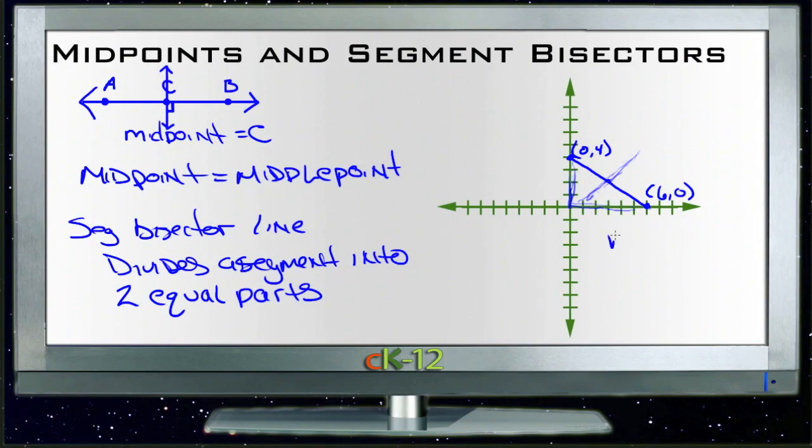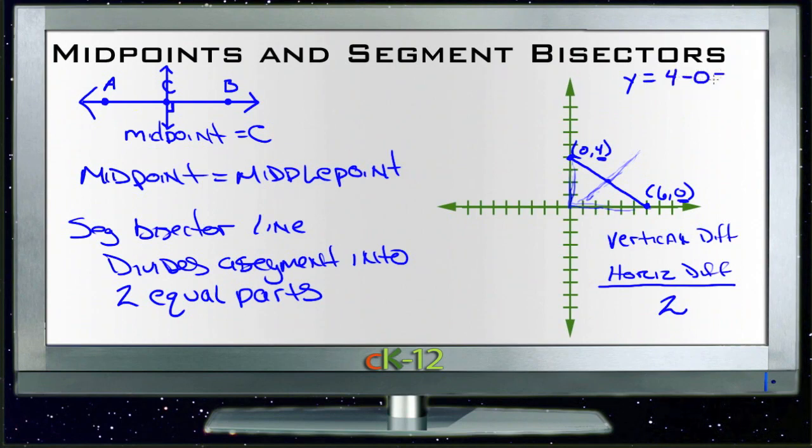So if we say the vertical distance, vertical difference, and the horizontal difference, divided by two, both divided by two, that will give us the midpoint. Well, the vertical difference here is just the y coordinate, 4, subtracted one from the other. So if we take 4, the y coordinate, is 4 minus 0, well that's - I'm sorry, it's 4, not 0 - is 4, and we divide that by 2. We divide that 4 by 2, we get a y coordinate of 2.